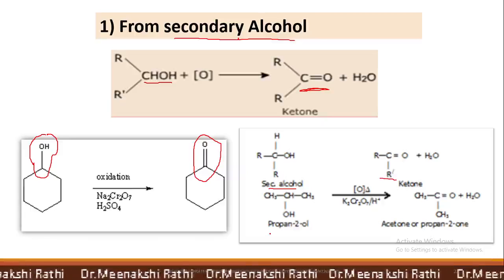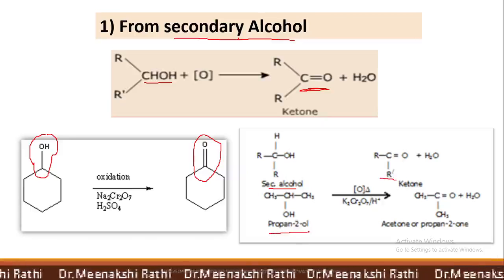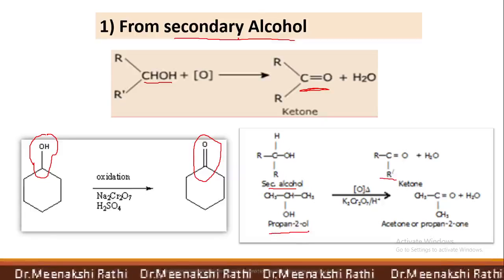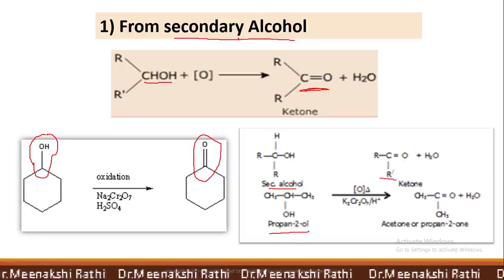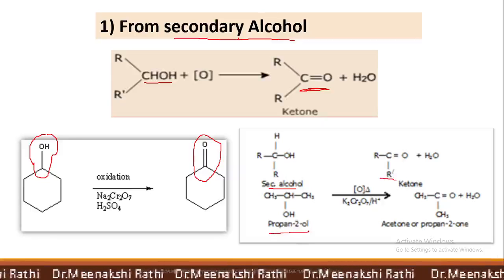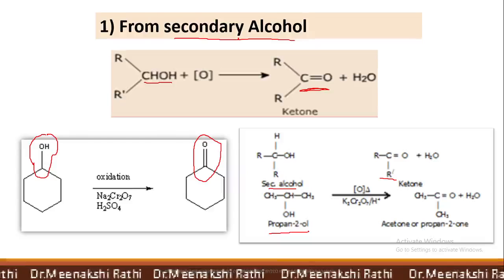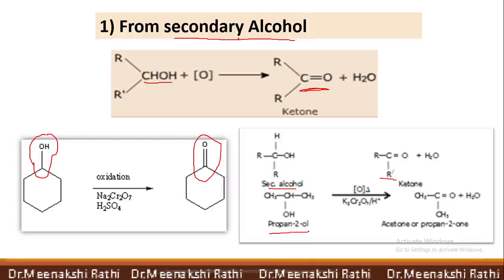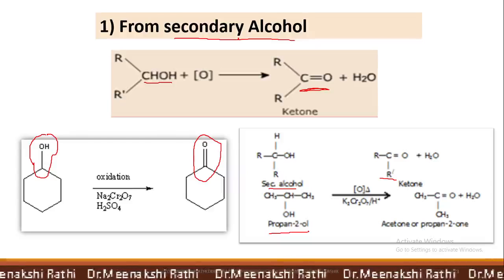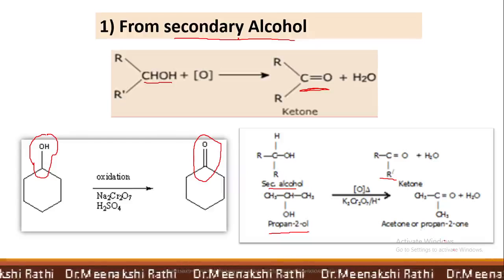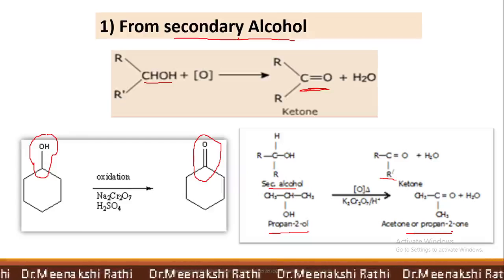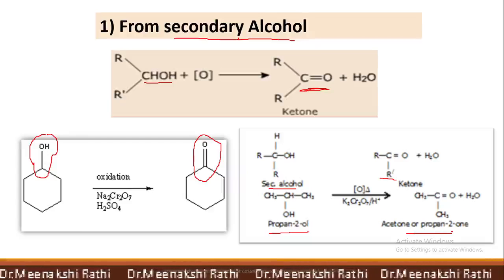This can be well explained by taking the example of 2-propanol. 2-propanol is a secondary alcohol which on oxidation gives acetone, or propanone — 2-propanone.